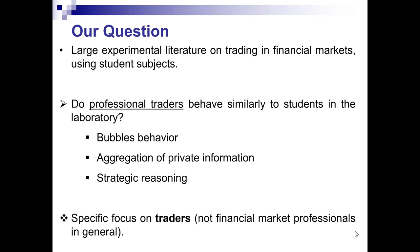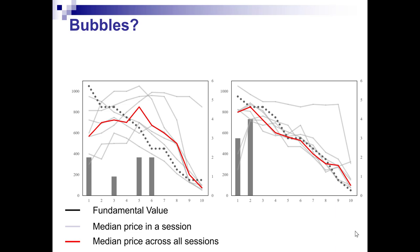Let's go to the first question: do traders bubble? I'll make you guess which of these two panels refers to the trader treatment and which one to the student treatment. Here is the answer. This is the panel for the students. The median price, shown as the red line, displays the standard bubble behavior observed in previous experiments with students, where the price goes above the fundamental value, which is the dotted line, and only by the end of the experiment converges to the fundamental value.